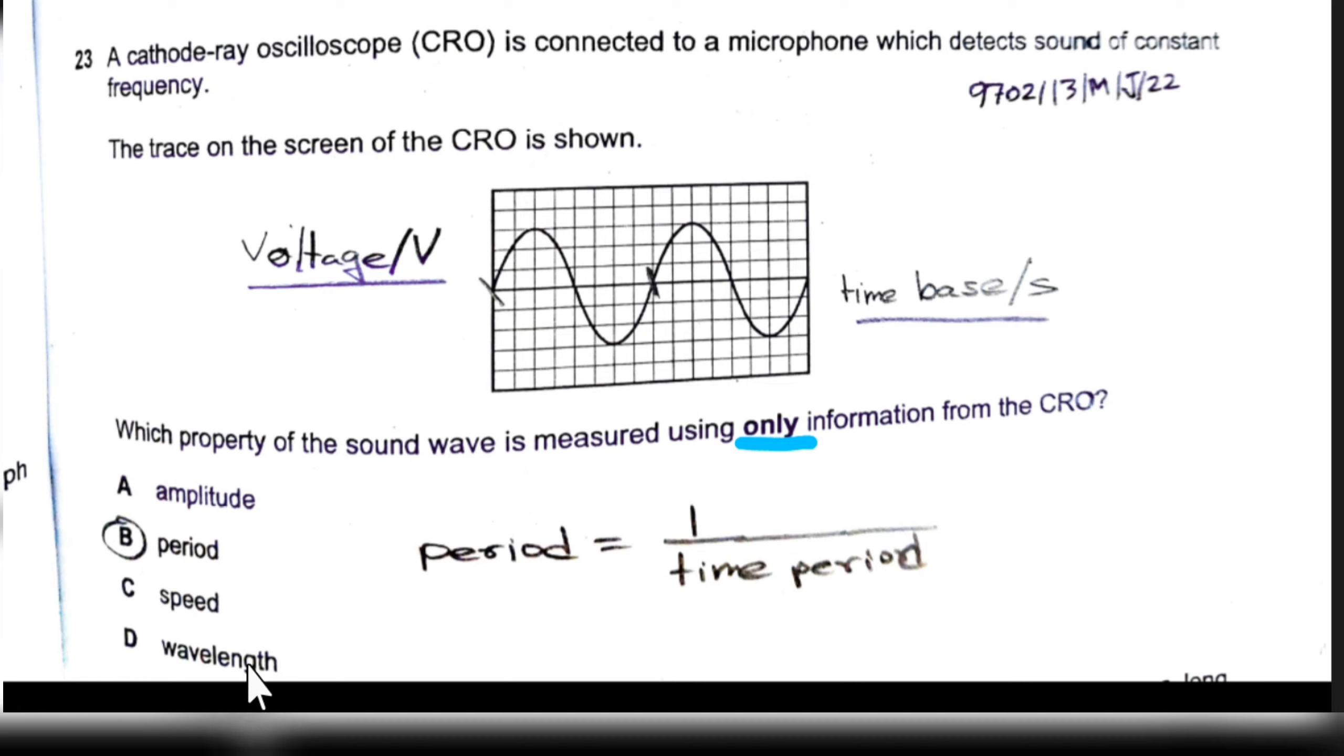We can't measure the wavelength because there is no distance given for a particular wave. Instead we are given the time base. As we know the time base, we can calculate the time period for one wave. We can use this to calculate the period of the wave.